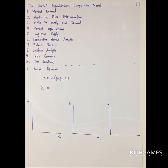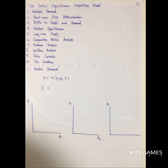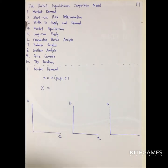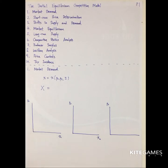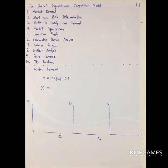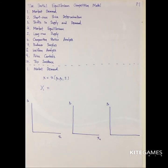Today we will talk about the partial equilibrium competitive model. We have several topics: first, market demand; second, how to determine price in the short run; third, shifts in demand and supply; fourth, market equilibrium; fifth, long-run supply; sixth, comparative statistics analysis — meaning if some variable changes, what is the effect; seventh, producer surplus in the long run; and finally, welfare analysis and two government policies: price control and tax incidence.